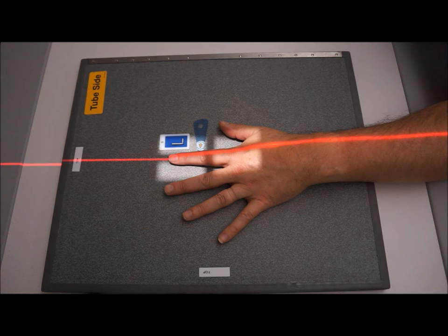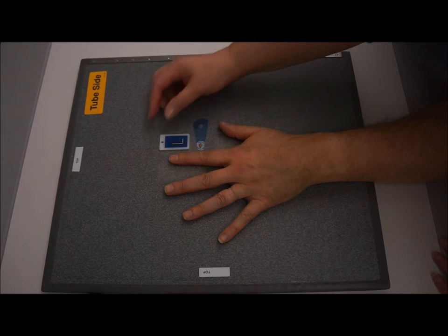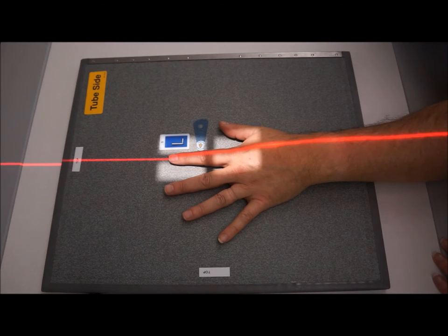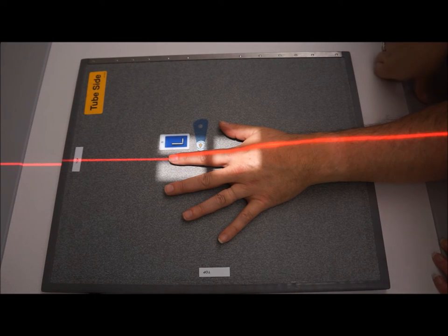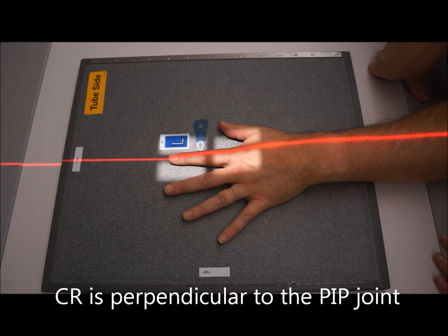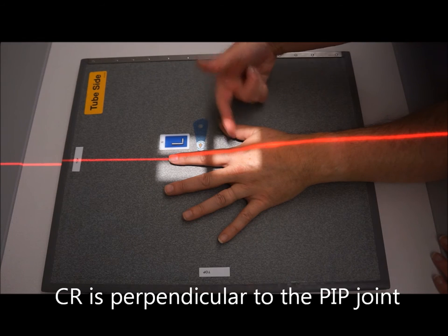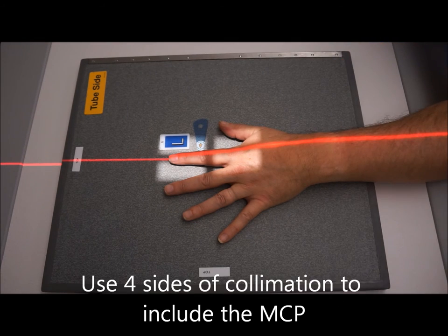This is a three-view second digit, so this is a PA second digit. We want the digit parallel to the image receptor with the central ray centered at the proximal interphalangeal joint. I do want to make sure that I'm including the metacarpophalangeal joint.